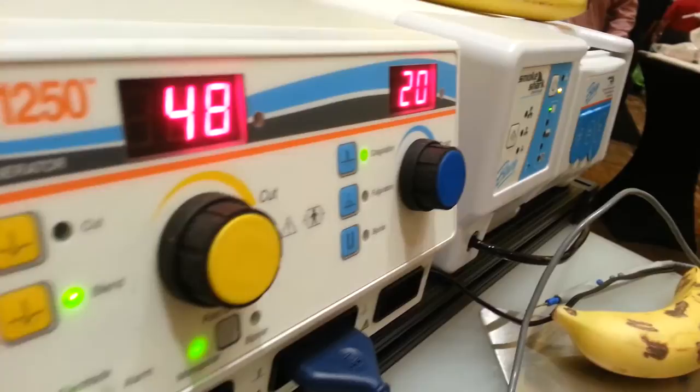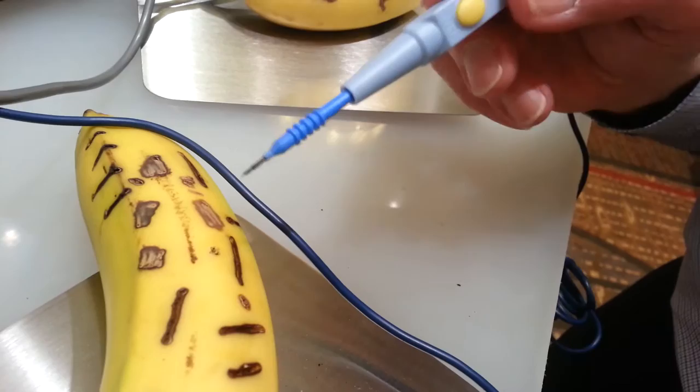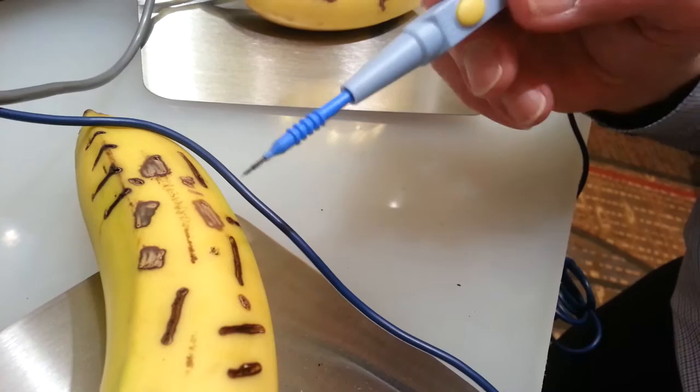I have a pinpoint coag, which is mainly for a big, large bleeder. If I need to shut it down, I would take the tip of my electrode here and put it right on the blood vessel, and I would activate it, and it would allow me to dry out the liquid that's in the skin cell and shut the bleeder down.